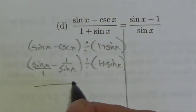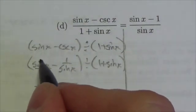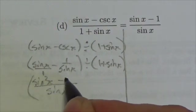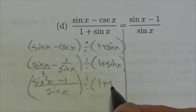So what I'm going to do here is make this sine of x as the denominator. I have to multiply numerator and denominator by sine of x so this will become sine squared of x minus 1 divided by 1 plus sine of x.